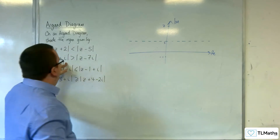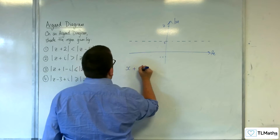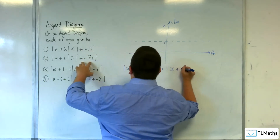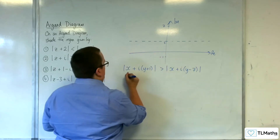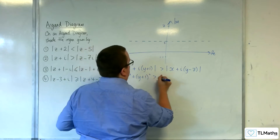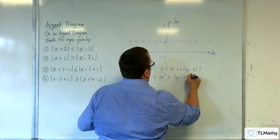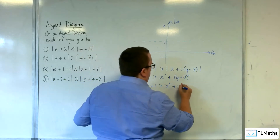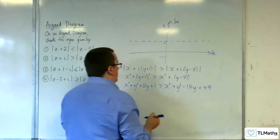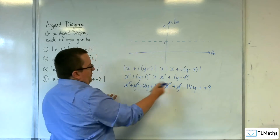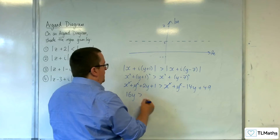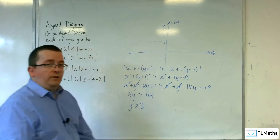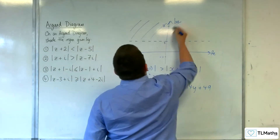Should we shade the top or the bottom? We've got z plus i, so x plus iy plus i, so x plus i(y plus 1) modded. And that's greater than x plus i(y take away 7), so x plus i(y take away 7) modded. So we're going to have x squared plus (y plus 1) squared is greater than x squared plus (y minus 7) squared. Expanding: x squared plus y squared plus 2y plus 1 is greater than x squared plus y squared minus 14y plus 49. The x squared and y squareds can go. Move the 14y onto the left-hand side, so we get 16y. Subtract 1 from both sides, we get 48. 48 divided by 16 is 3. So y must be greater than 3.